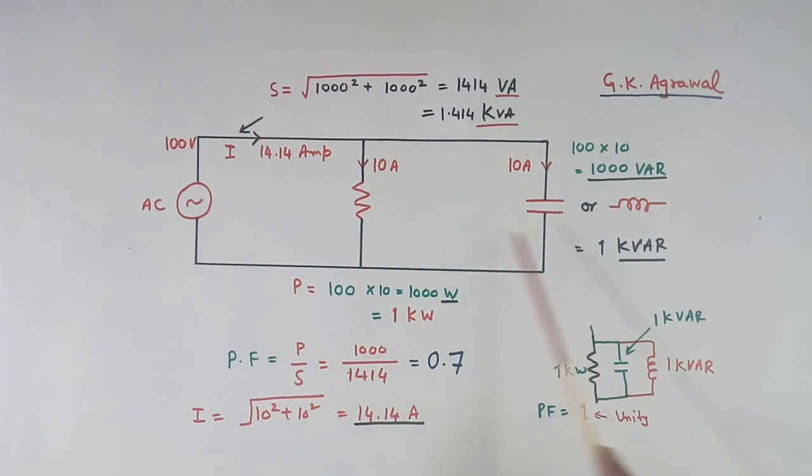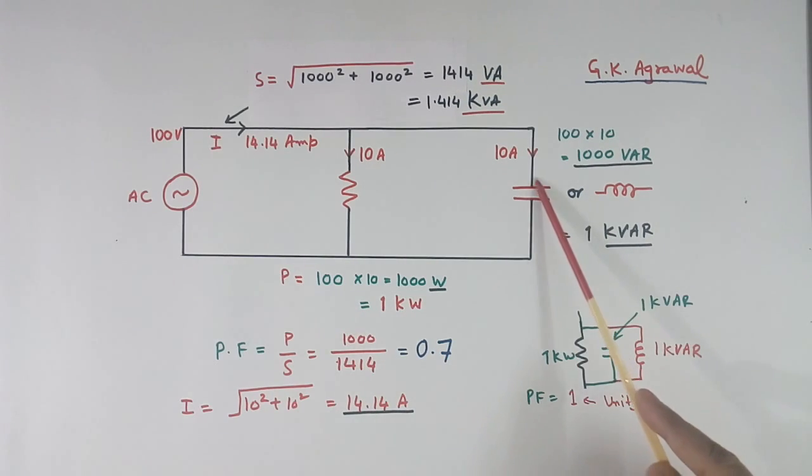So all three powers are shown here: active, reactive, and VA. Here I have connected only capacitor or inductor, but here both are connected in parallel with resistor. Now suppose this also is 1 kVAR and this also 1 kVAR. Then reactor and capacitor will always cancel each other. Their nature is opposite. So there will not be any reactive power. We will have only active power of 1 kW. Power factor will be 1. That is called the unity power factor.